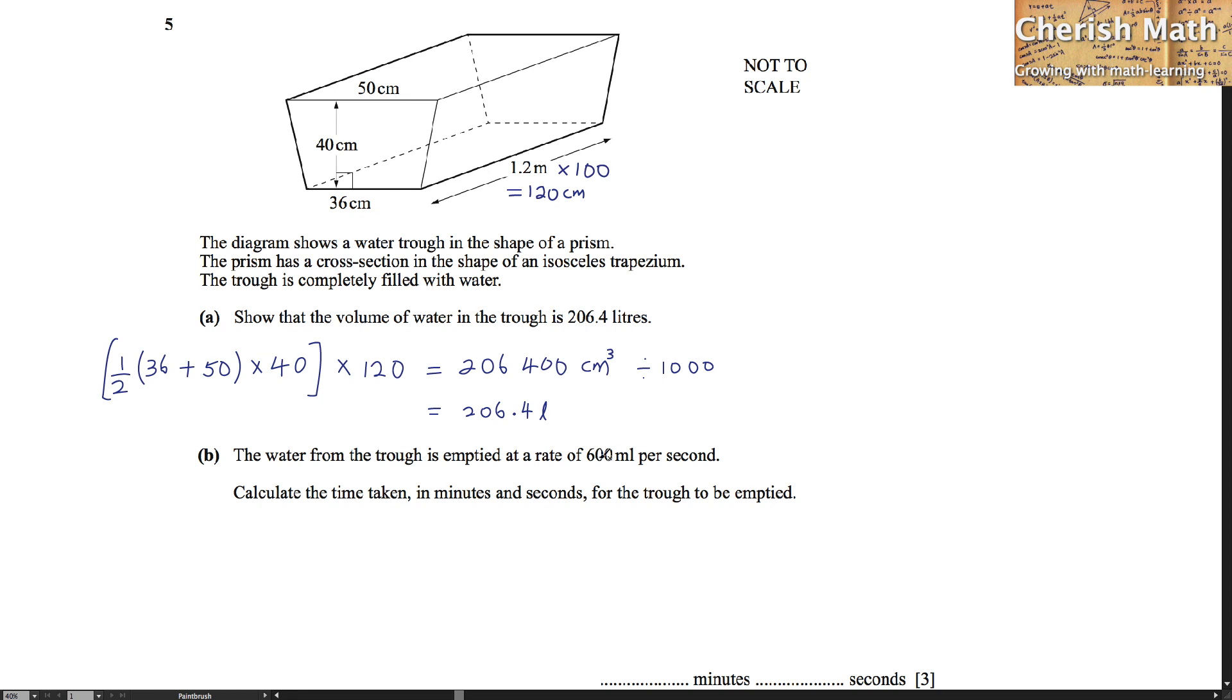Now we are looking at 600 ml which is equivalent to 600 centimeter cubed, and we are going to use the number that we got earlier here which is 206,400 to be divided by the 600 ml. And we are getting the time required to empty the trough, which is 344 seconds.